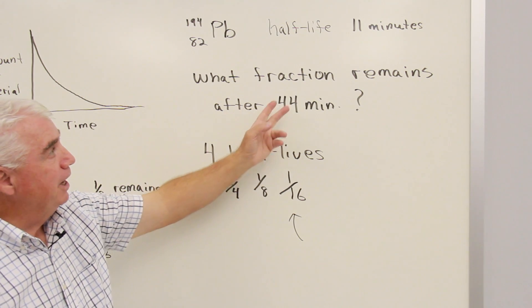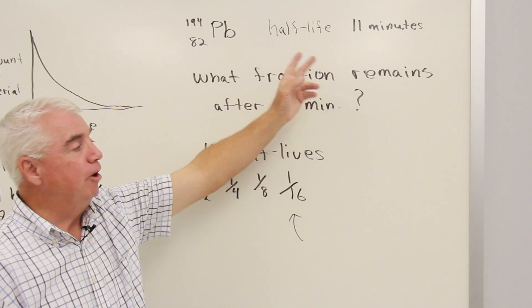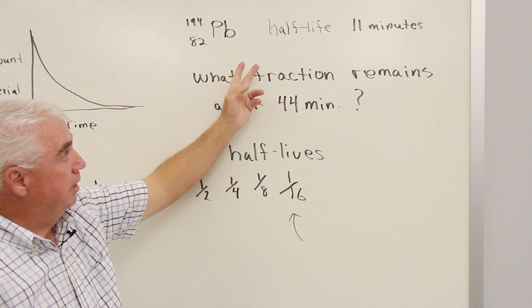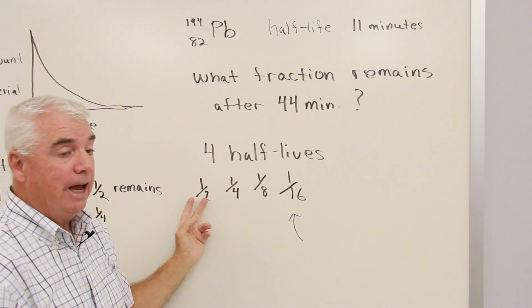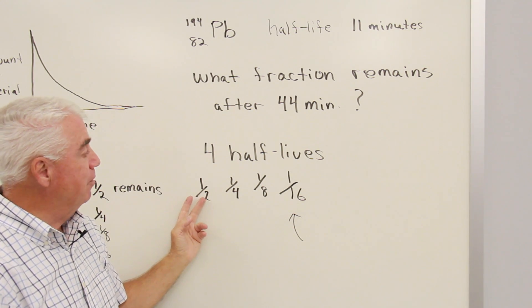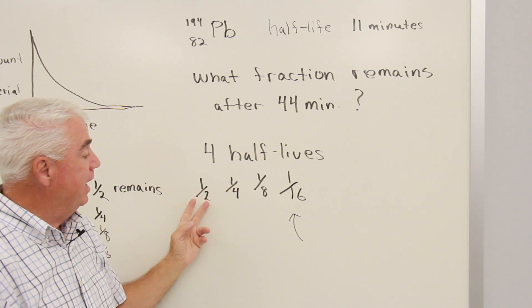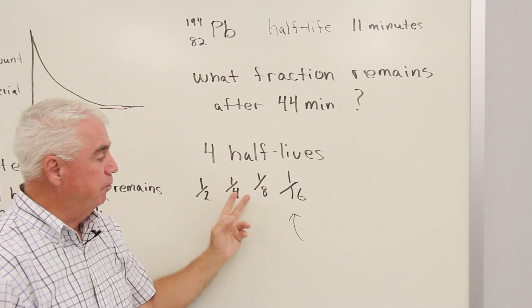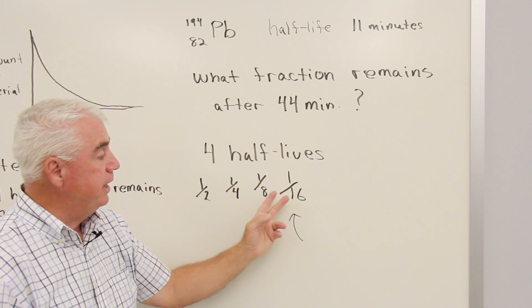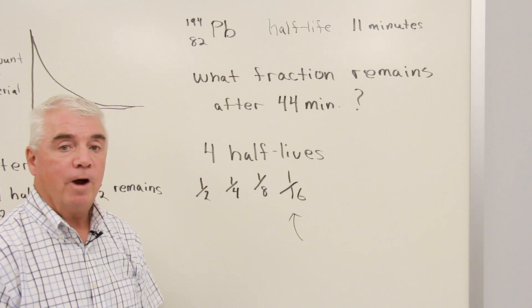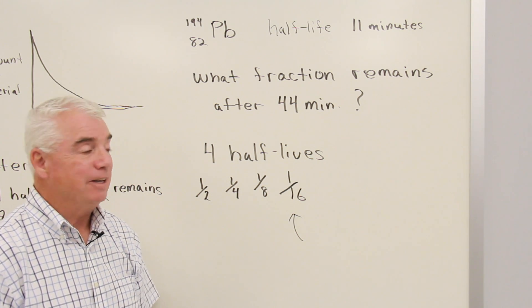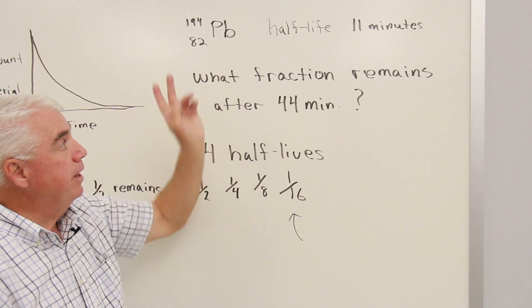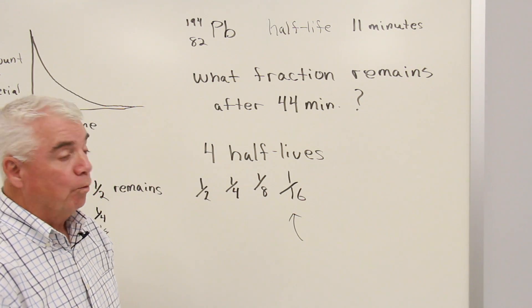Well, 44 minutes is four half-lives. After one half-life, we'd have one half of the original material. After two half-lives, a fourth. After three, one-eighth. And after four half-lives, one-sixteenth. One-sixteenth of the original material would be there after 44 minutes.